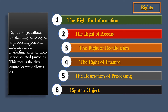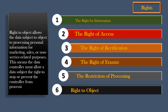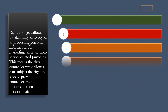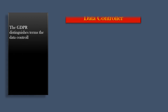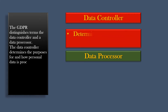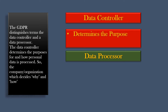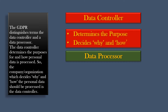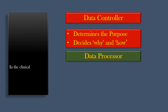This means the data controller must allow a data subject the right to stop or prevent the controller from processing their personal data. The GDPR distinguishes the terms data controller and data processor. The data controller determines the purposes for and how personal data is processed. So, the company or organization which decides why and how the personal data should be processed is the data controller.